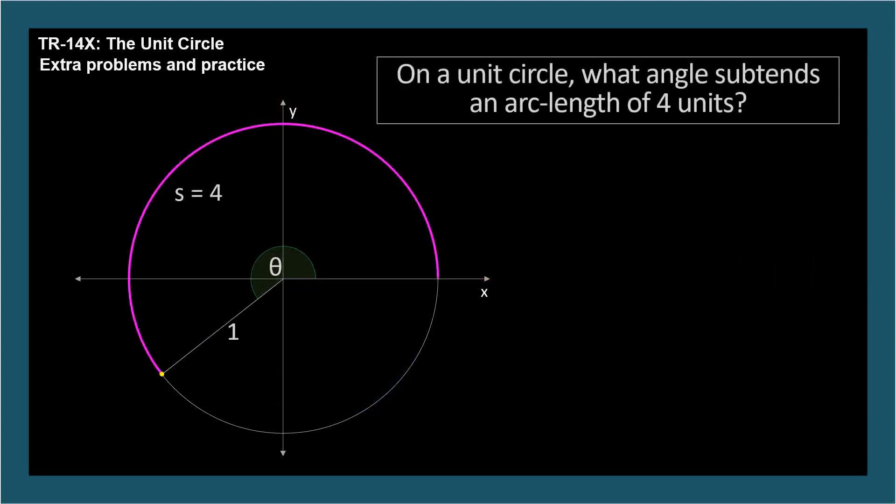On a unit circle, what angle subtends an arc length of 4 units? Since the radius is 1 unit, an arc length of 4 units means 4 radii, which in turn means 4 radians. Here's the equation: S equals theta r, so theta equals S divided by r. S divided by r is 4 over 1, which is 4 radians. When the radius is 1, arc length equals theta.